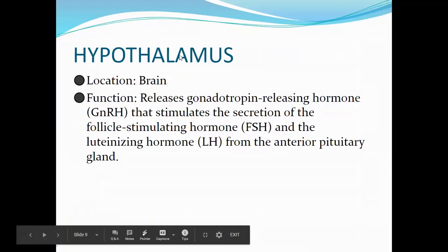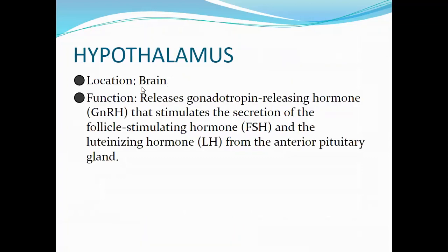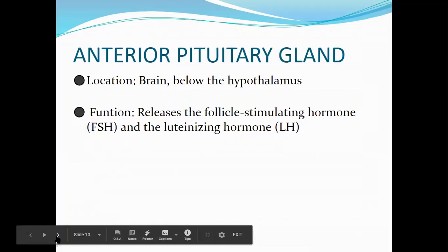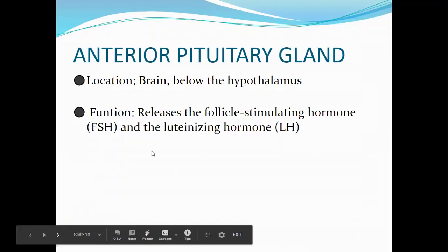The function of the hypothalamus is it releases gonadotropin-releasing hormone, or GnRH, that stimulates the secretion of the follicle-stimulating hormone and the luteinizing hormone from the anterior pituitary gland. The anterior pituitary gland, located right below the hypothalamus, will release FSH and LH.